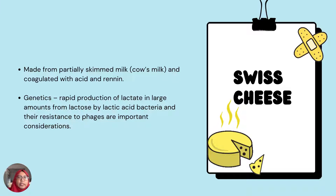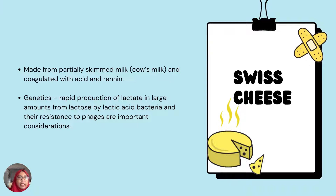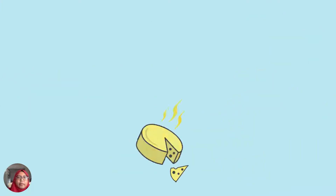For sweet cheese, it is made from partially skimmed cow milk and coagulated with acid or rennet. The rapid production of lactate in large amounts from lactose by lactic acid bacteria and their resistance to phage are important considerations.